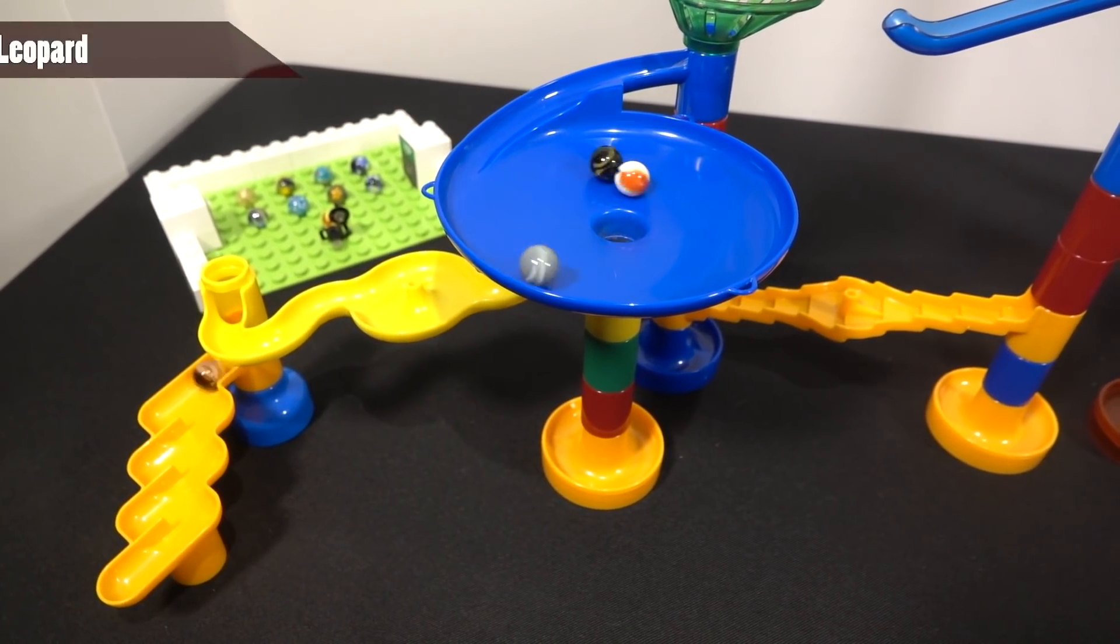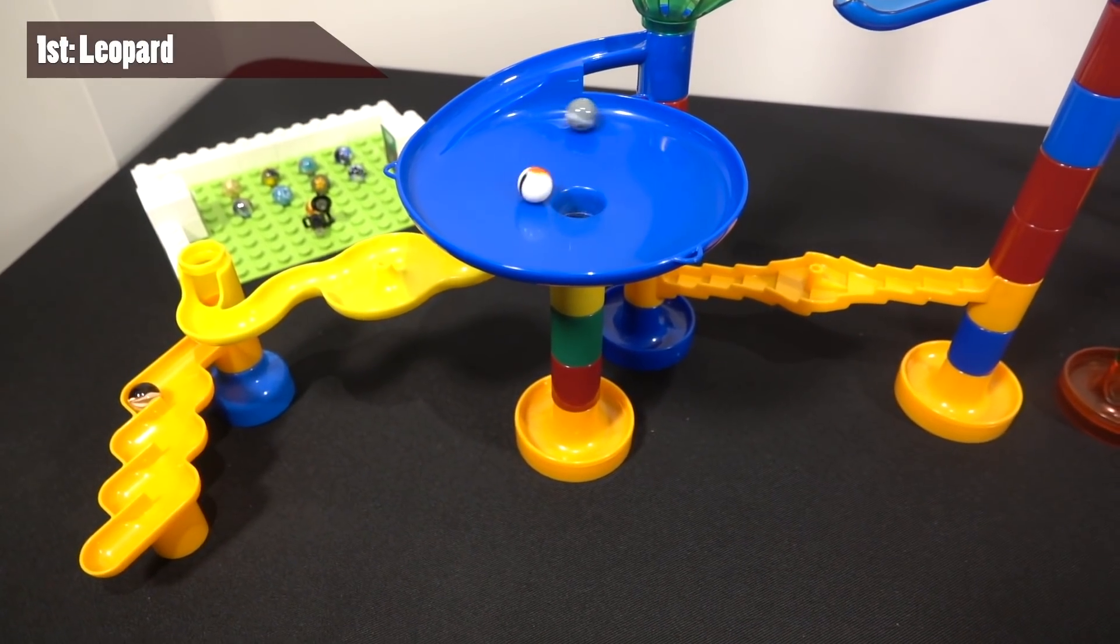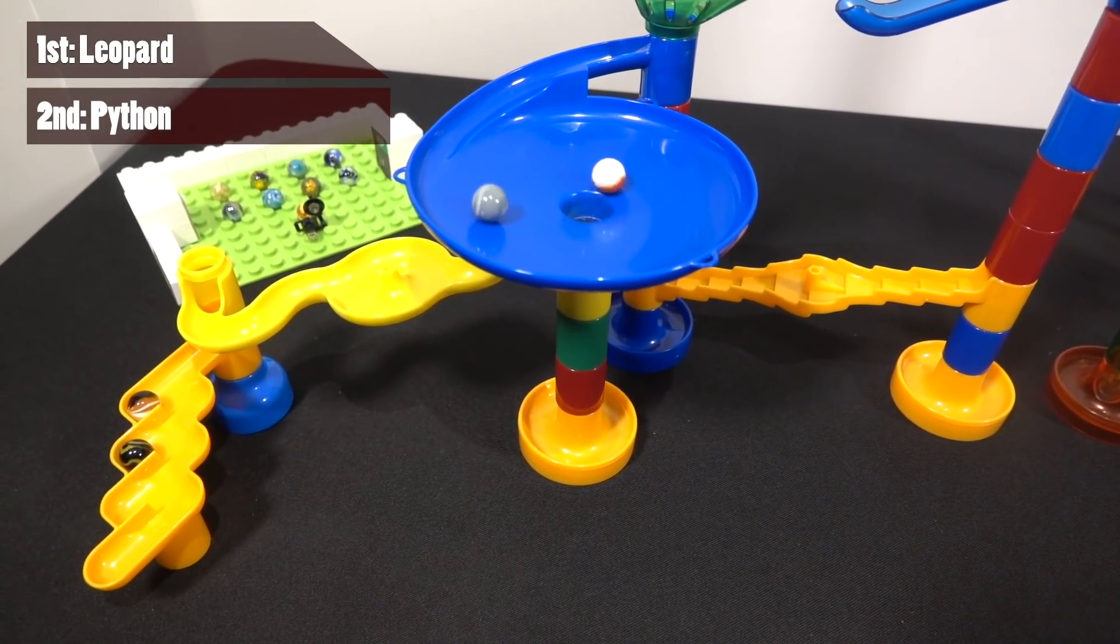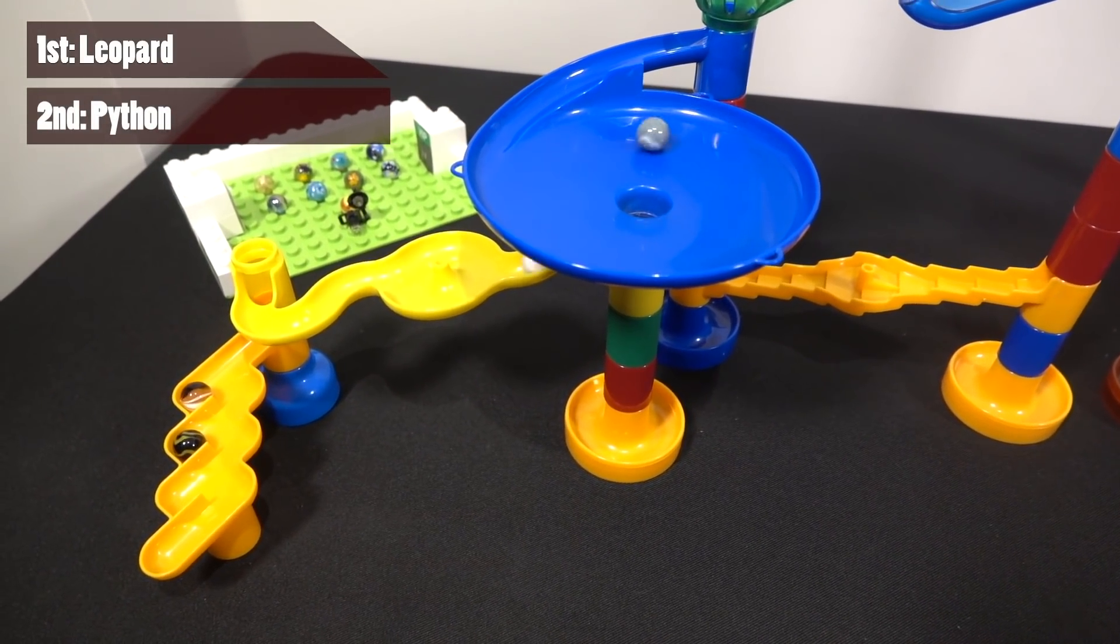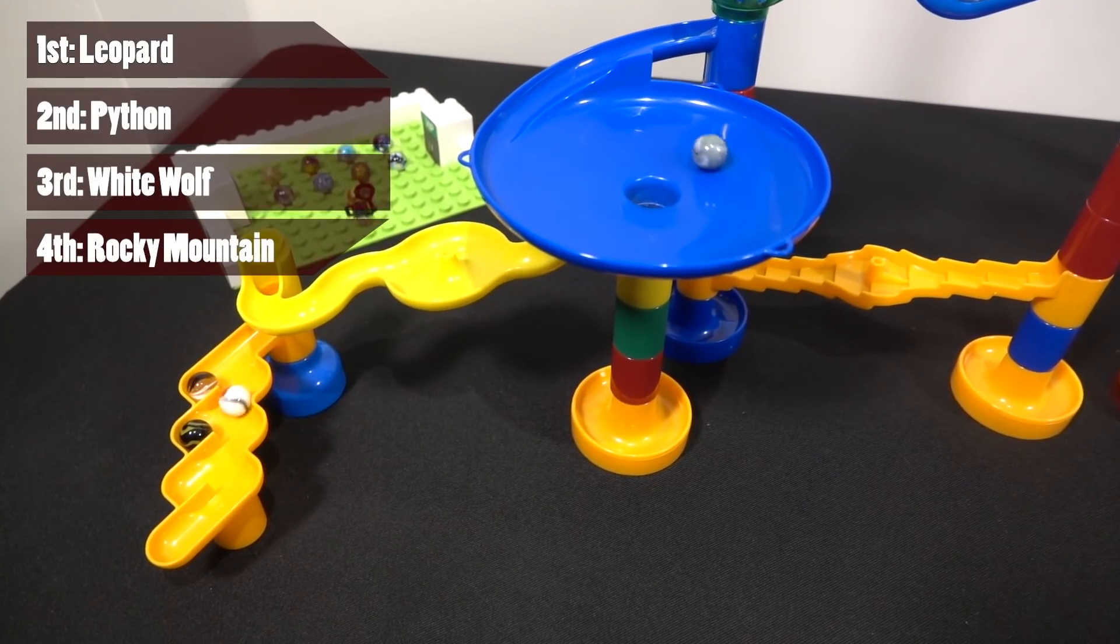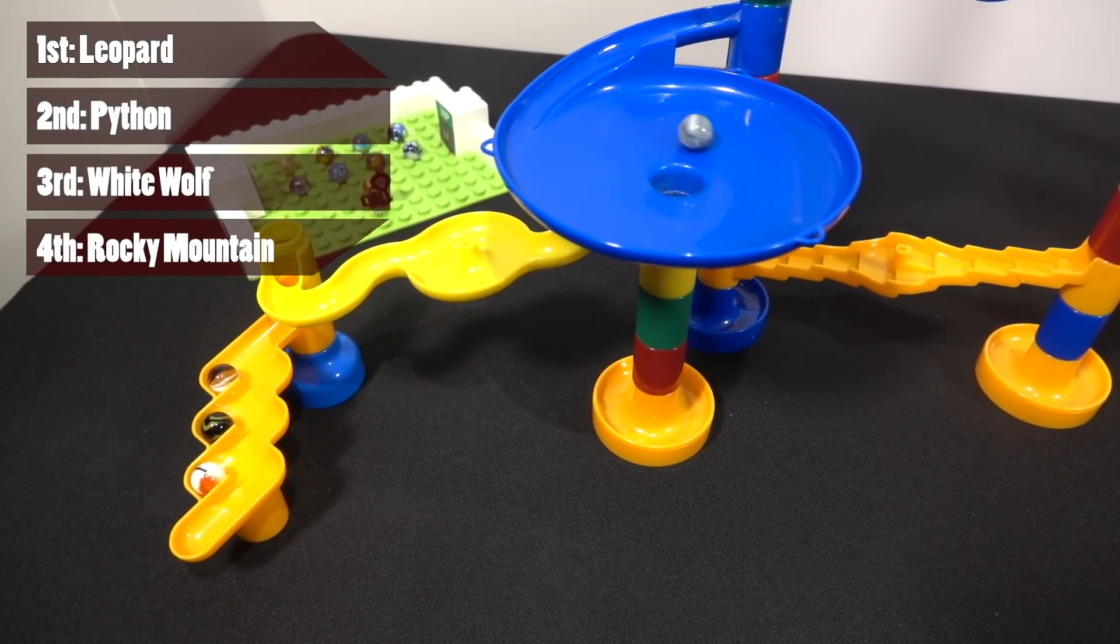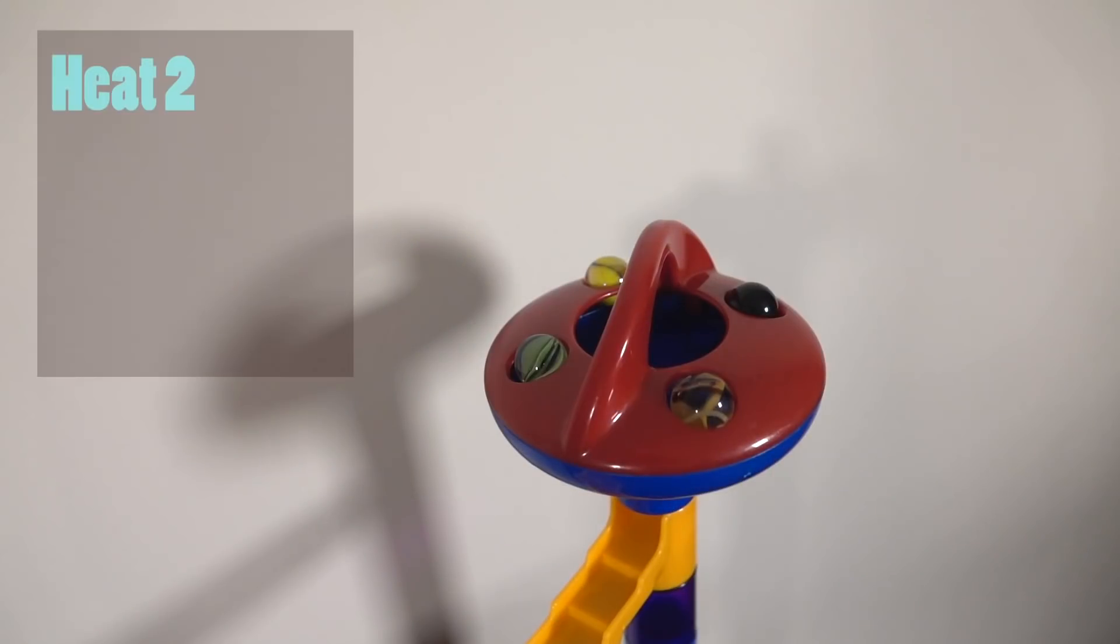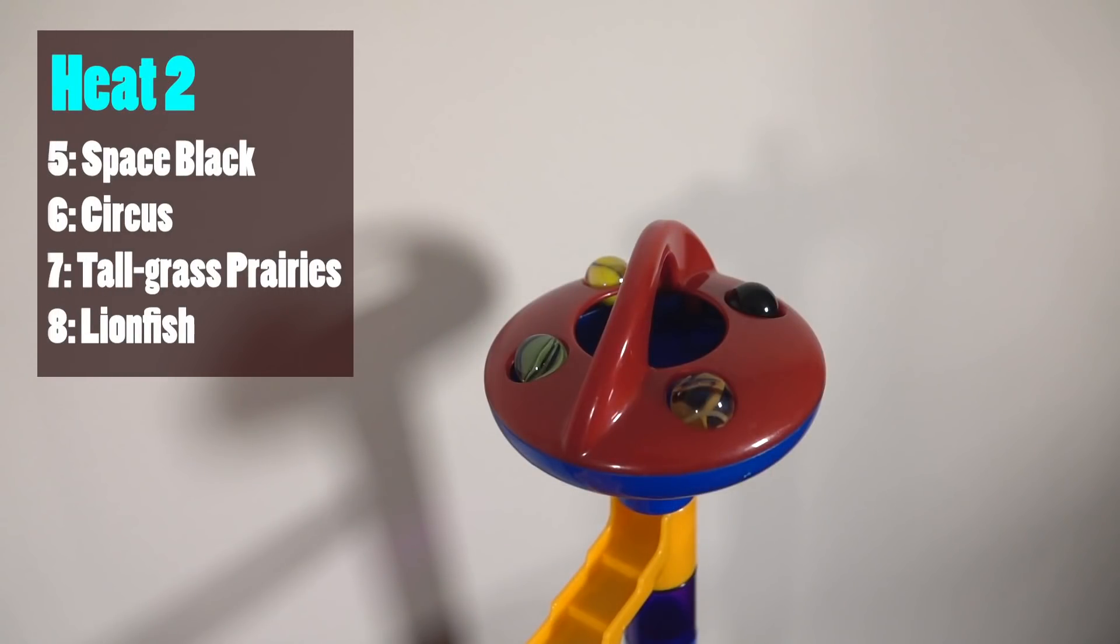Leopard still going to keep that inside corner. White Wolf trying to get a last ditch effort to get second at least, but Python is not going to budge at all, placing second. A disappointing effort there from White Wolf. His ego was probably just too high, and his main opponent Rocky Mountain finishes fourth ironically.